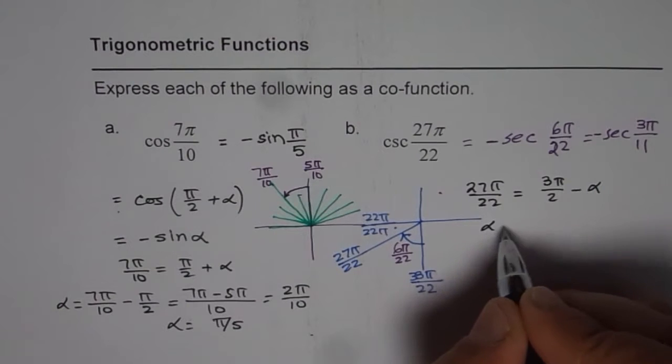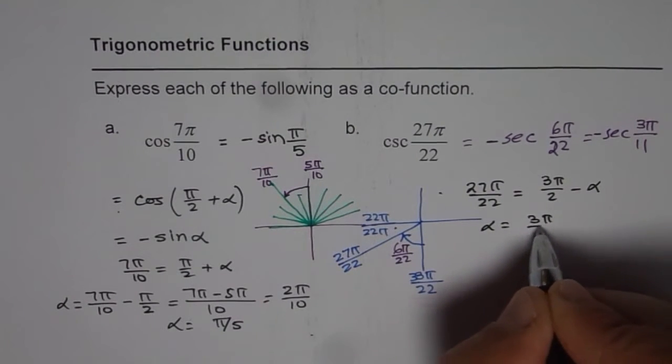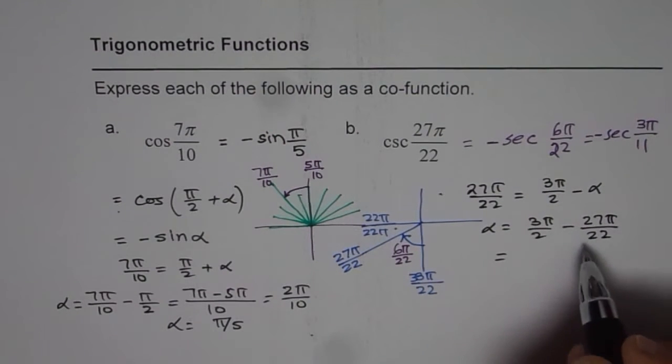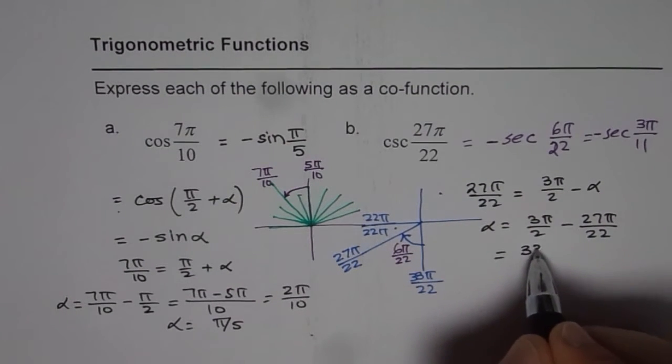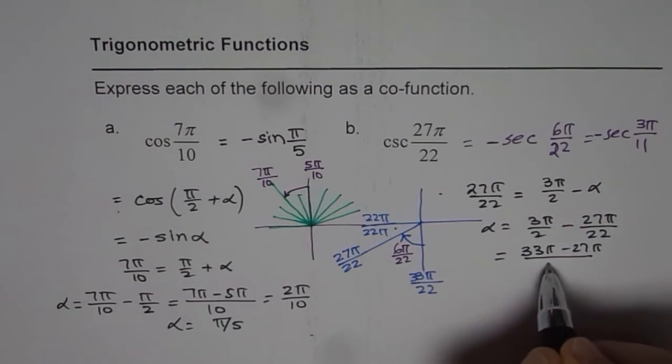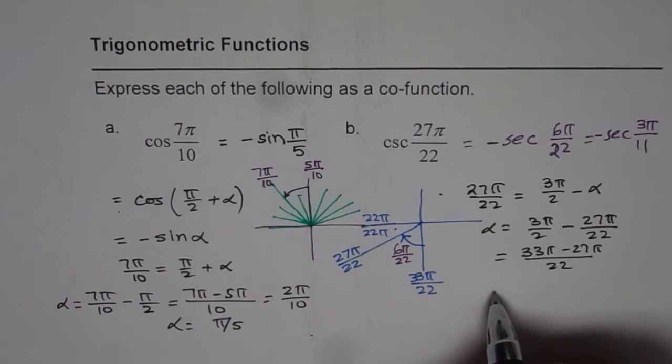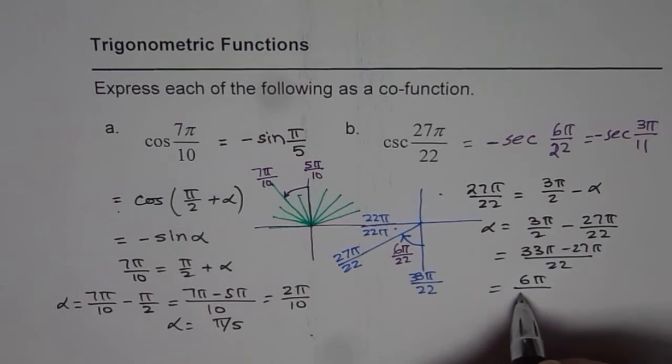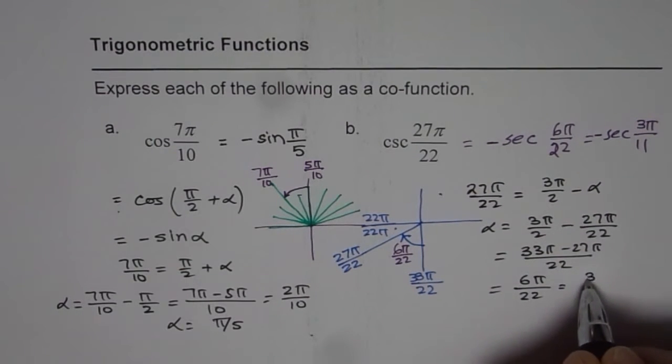So α is equal to 3π/2 minus 27π/22. So that gives us 33π minus 27π over 22, exactly what we calculated. So 33 minus 27 is indeed 6. So we get 6π/22, which is the same as 3π/11.